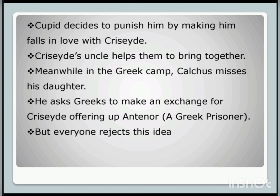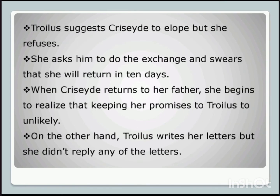Criseyde's uncle Pandarus plots to bring the pair together and also arranges for them to spend the night together. Meanwhile, in the Greek camp, Calcas starts missing his daughter. He asks the Greeks to make an exchange, offering up Antenor — a Greek prisoner — in exchange for Criseyde. But not everyone in Troy is fond of this idea, including Troilus. Instead, Troilus suggests Criseyde elope, but she refuses. She asks him to wait and swears that following the exchange, she will leave her father and return to him in 10 days.